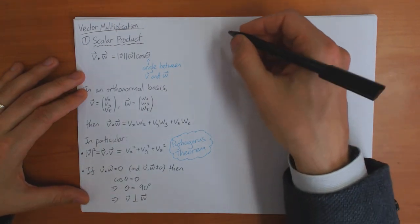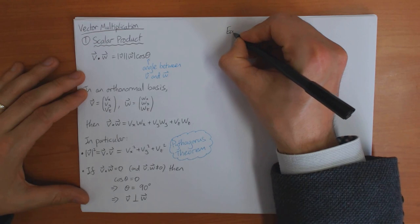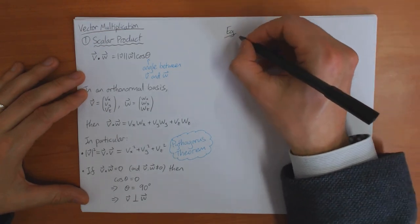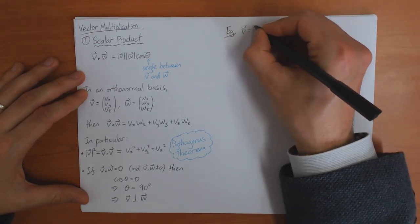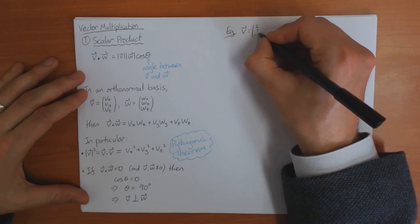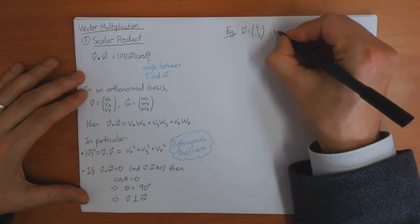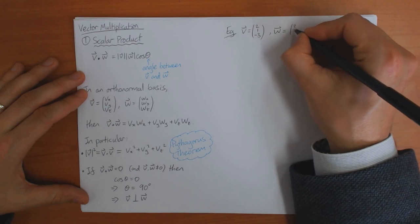So before we finish, I'll just do one very quick example, just to check that everything is understood here. Suppose that my vectors v is (2, 1, -3), and my vector w is (2, 2, 1).